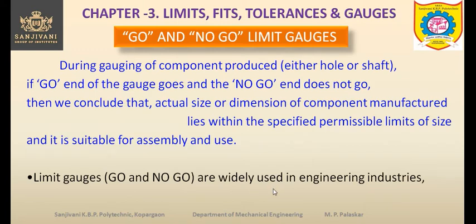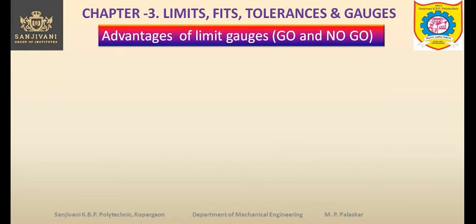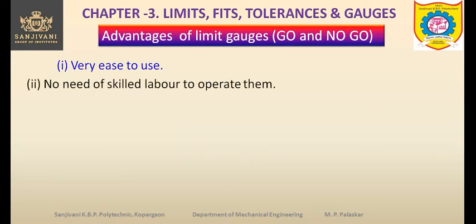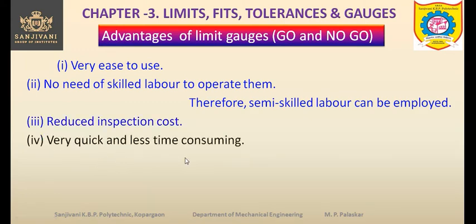The limit gauges — go and no-go — are widely used in engineering industries due to their simplicity and advantages. First, they are very easy to use. Second, there is no need for skilled labor to operate them — semi-skilled labor can be employed — which saves cost and reduces the inspection cost. Third, they are very quick and less time-consuming.